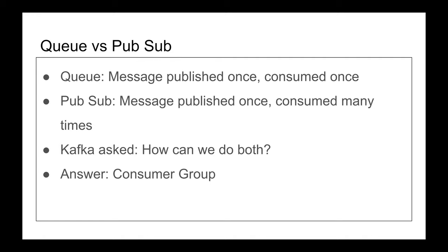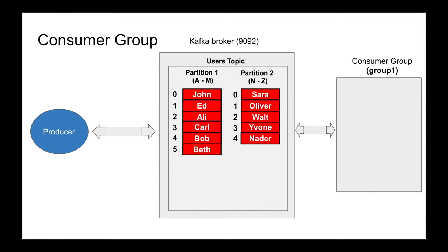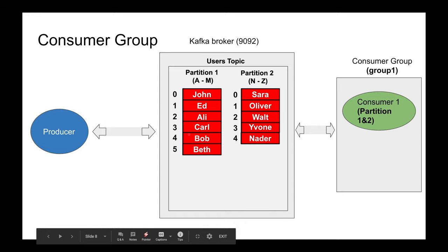Consumer groups were invented to do essentially parallel processing on partitions. They can fix the problem of consumers having to be aware of partitions, and they allow consuming data in parallel from multiple partitions. When you create a new consumer and say 'join group one,' if you're the only consumer, you are now responsible for all partitions in the topic. If you subscribed to topic users and it has two partitions, you handle both.